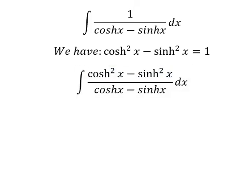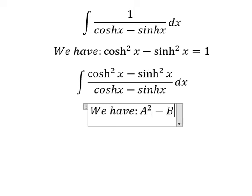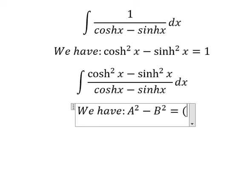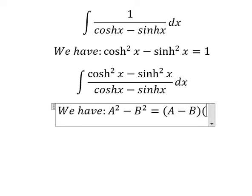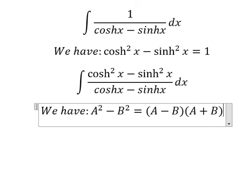Next we have the second formula in here. That is about A squared minus B squared equals to A minus B multiplied by A plus B. This is about identity.